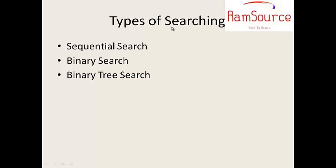Types of Searching: Sequential Search, Binary Search, and Binary Tree Search. In order to search using binary tree search, we can use trees. But as far as now, there are sequential search and binary search.